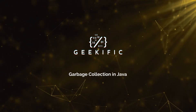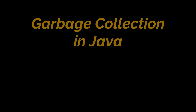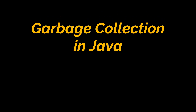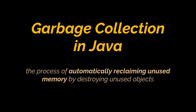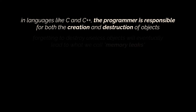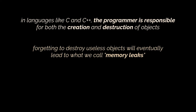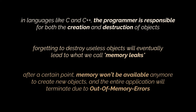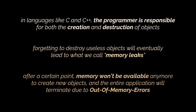What is garbage collection in Java? Simply put, it is the process of automatically reclaiming unused memory by destroying unused objects. In languages like C and C++, the programmer is responsible for both the creation and destruction of objects. Sometimes the programmer may forget to destroy useless objects, and the used memory of the system will keep growing, leading eventually to what we call memory leaks. After a certain point, memory won't be available anymore to create new objects.